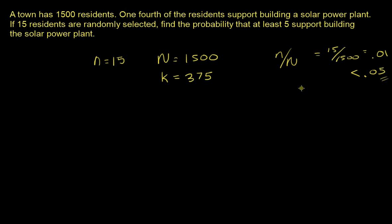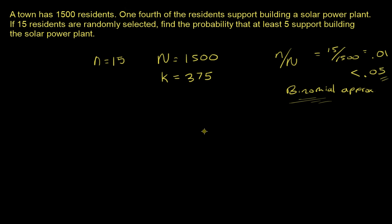The reason you'd want to use the binomial approximation is that doing combinations involving huge numbers like 1,500 can blow up a calculator very fast. If you're using Excel or a more advanced calculator you could use the hypergeometric distribution directly, but the binomial approximation helps simplify the calculation.